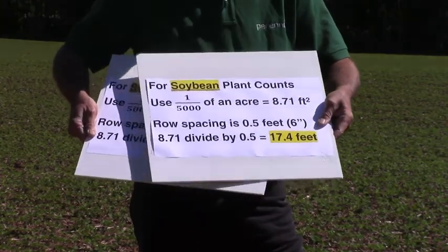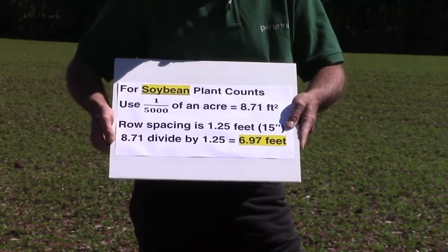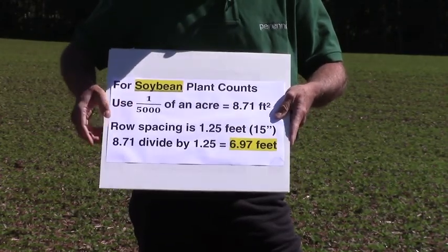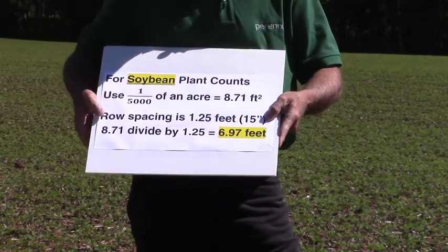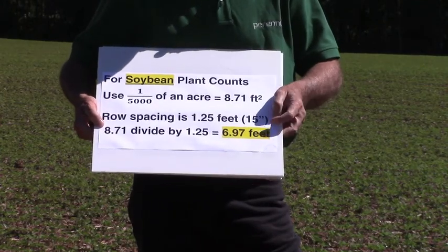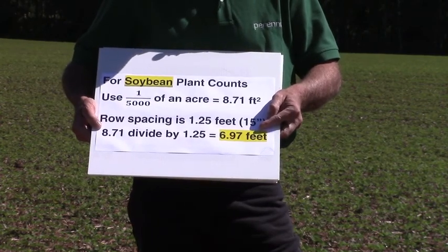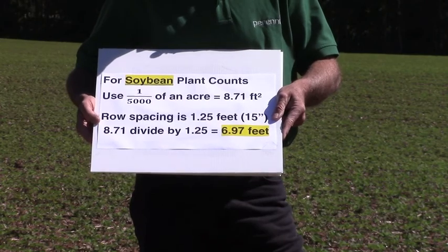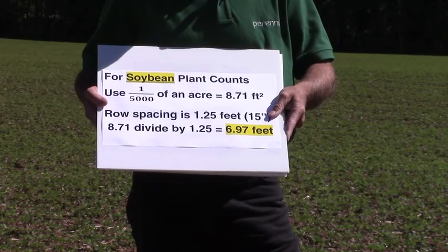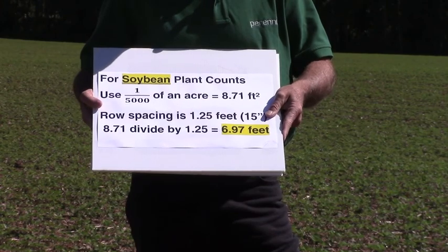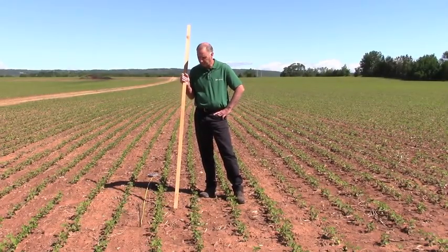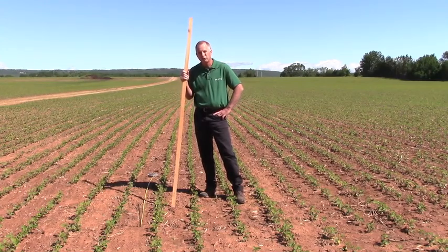If your row spacing is different, your row length that you're counting is going to be a little different. We're standing in this field that has fifteen-inch rows, so the one five-thousandth of an acre is still 8.7 square feet. Your row spacing though is fifteen inches, or one and a quarter feet, so 8.7 divided by one and a quarter — in this case with the fifteen-inch rows, you're going to be doing a plant count on 6.97, or darn near seven feet of row. You've got to know how much length of row in that row spacing to count that represents one five-thousandth of an acre. We're in this field of fifteen-inch row soybeans, and you need 6.97 feet of linear row to represent one five-thousandth of an acre.